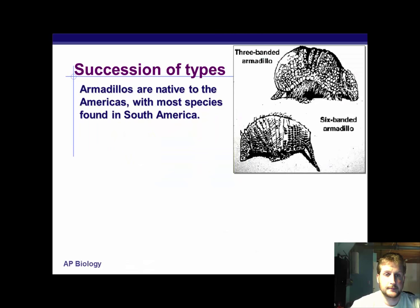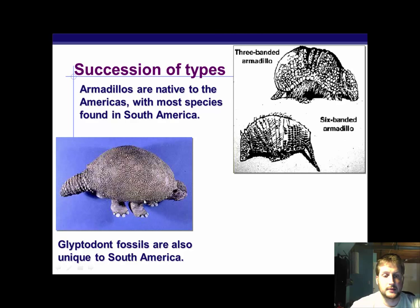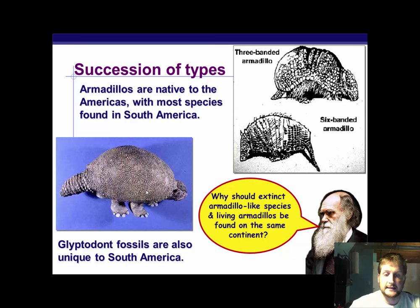Armadillos are native to the Americas, where most species are found in South America — we have three-banded and six-banded armadillos as the two species currently still living. What Darwin found were glyptodont fossils, unique to only South America. These were the size of a large car, while living armadillos are the size of a cat or a dog. These guys are now extinct, and what Darwin was looking at was the idea that these things are related — a past species and a new present species. So why should extinct armadillos and living armadillos be found on the same continent and nowhere else? That was his main question.